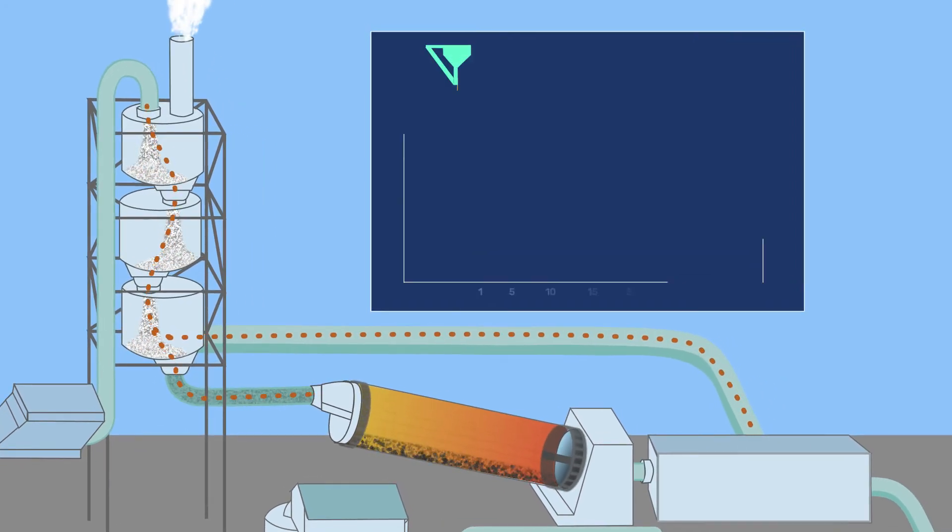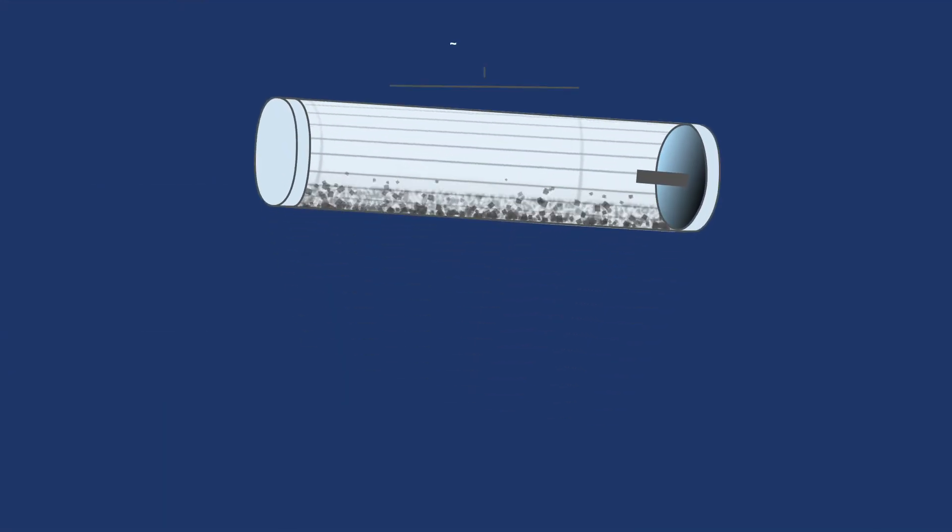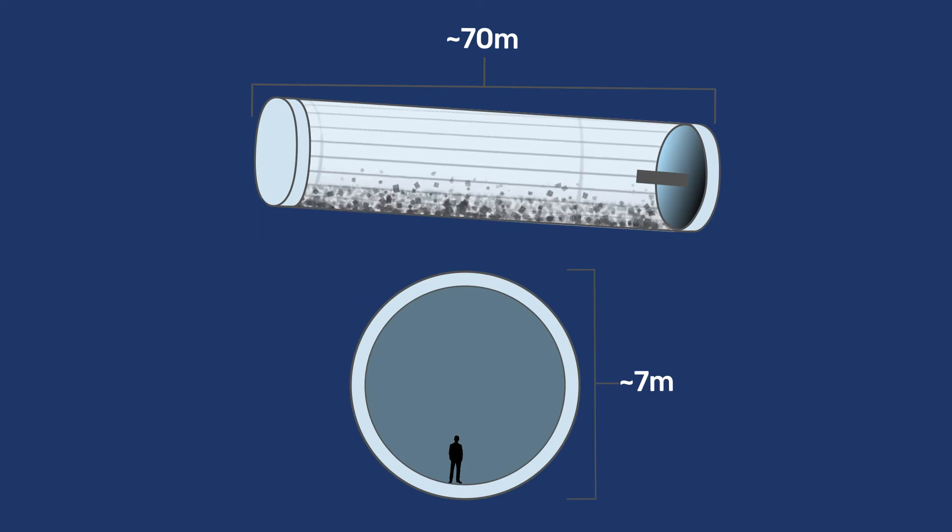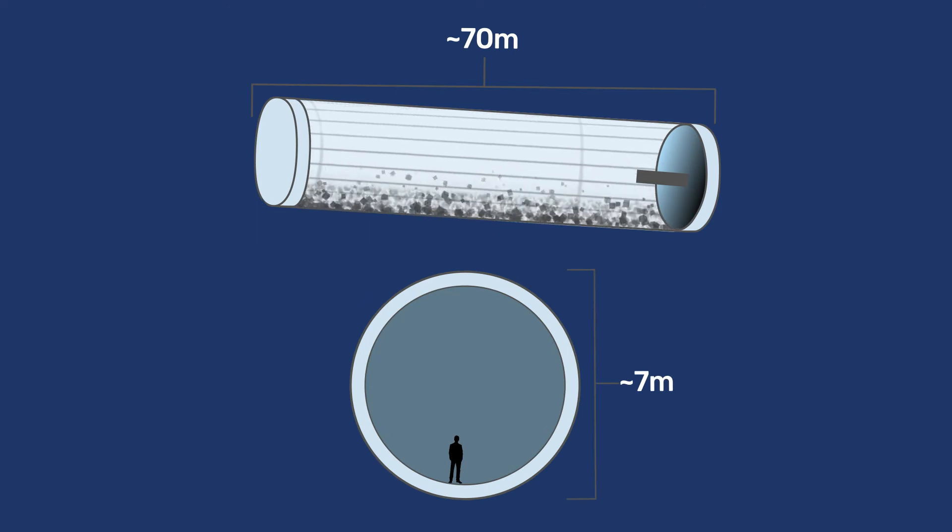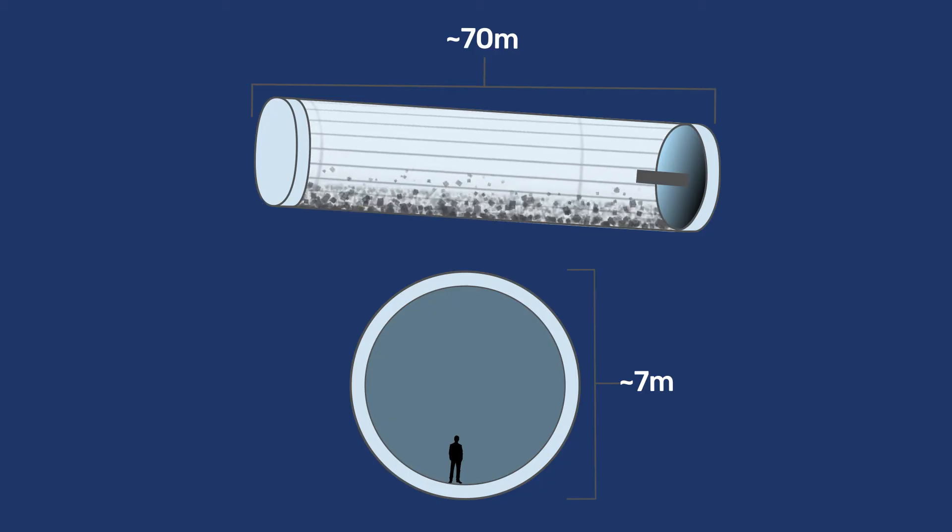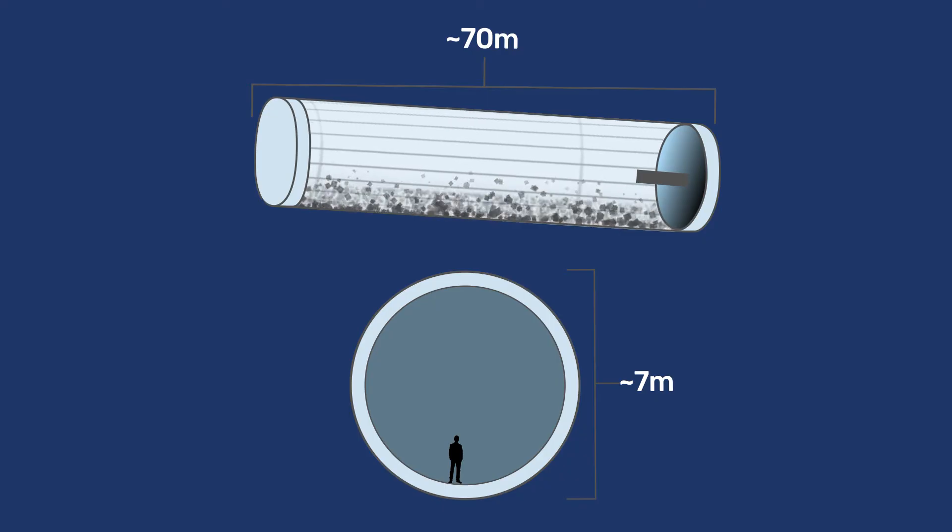Nowadays, clinkering takes place in rotary kilns. They are fed with the hot mix of calcium oxide and clays coming from the precalciner. These kilns have a length of around 70 meters and a diameter of about 7 meters. They are the central element of modern cement plants and a key part of making cement production a continuous and highly efficient process.